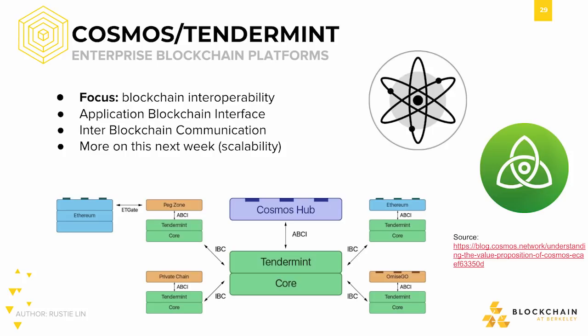Cosmos and Tendermint can also be used in enterprise contexts. Cosmos may provide a way for private blockchains to connect even if using different types of protocols, such as Hyperledger Fabric and Corda. Tendermint, being an efficient consensus mechanism that starts with a semi-trusted set of validators, is a prime consensus mechanism for enterprise blockchain networks. We'll be focusing more on the specifics of Cosmos and Tendermint in the scalability lecture.